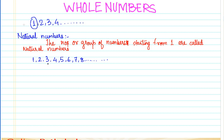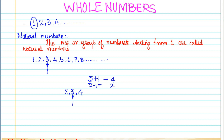Let us take the number three. When I add one to three, three plus one becomes four. When I subtract one from three, three minus one becomes two. So when I add one I get the number which is greater than three and is the next number after three, and when I subtract one from three I get the number just before three. So we have two, three, and four — where three is our selected number.